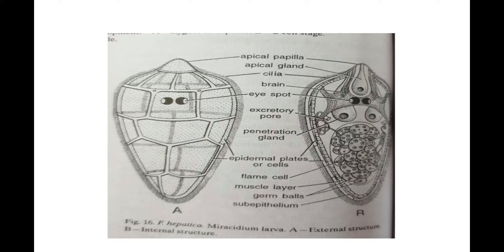The sporocyst looks like an elongated sac, about 0.7 mm long. Its body wall retains all the layers of body wall of miracidium except the ciliated epidermis, which is lost in the process of penetration and soon replaced by a thin cuticle. Glands, brain, eye spots and apical papilla of miracidium degenerate and disappear in sporocyst.